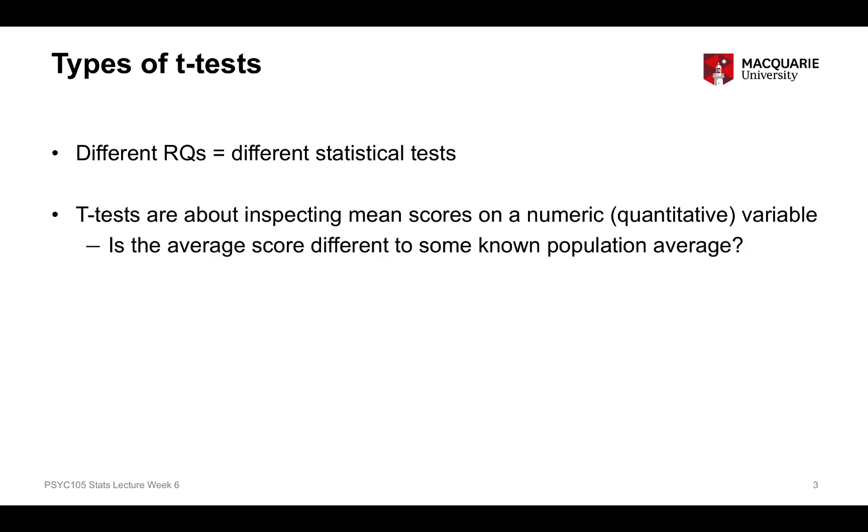The first kind of t-test, the one sample t-test, is looking to see if that average score, that mean score, is different from some other population average. So if the mean score in the population from which our sample was drawn is significantly different from the mean score in a different population.